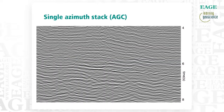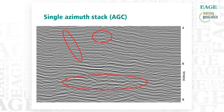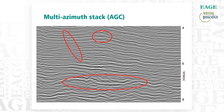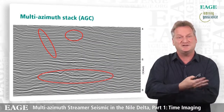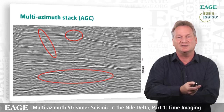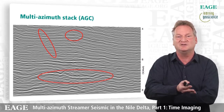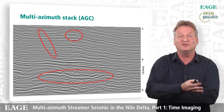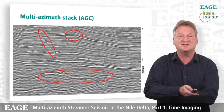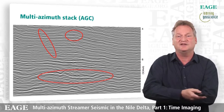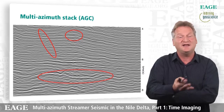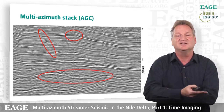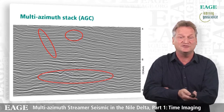Looking in the deeper section, you can see here some of the effects already noted — some reflectors are not as flat as they should be, indicating residual issues. Comparing single-azimuth to multi-azimuth stack, you can see the same benefits that appear up shallow in the deeper section as well. The top-left oval shows a fault that has really improved a lot. By adding these additional datasets acquired in different directions, we're really starting to get a better handle on solving the issues we have in the Nile Delta.